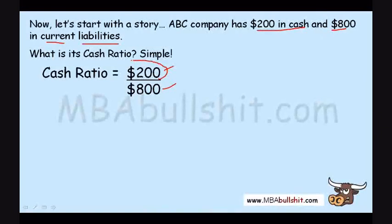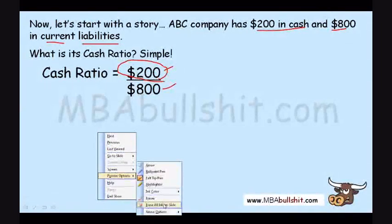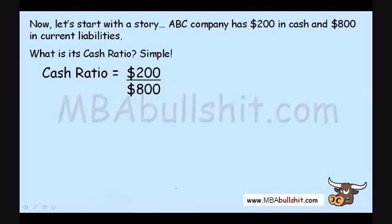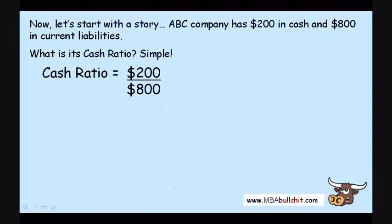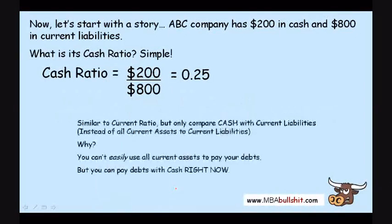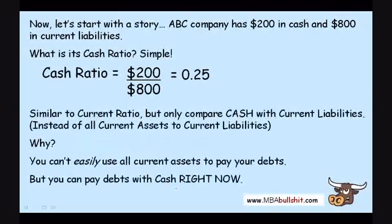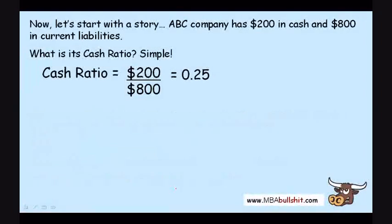You notice we only input the cash amount and not all of the current assets of the company. What will our cash ratio be? Very simple — it will be 0.25. So it's similar to the current ratio, but we only compare cash with current liabilities instead of all current assets to current liabilities.